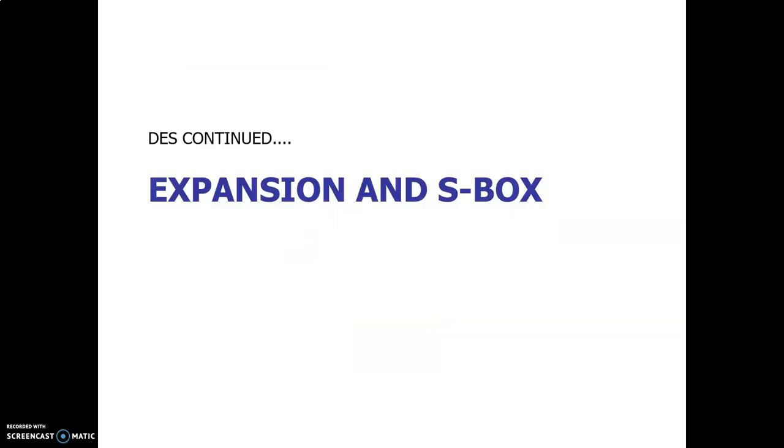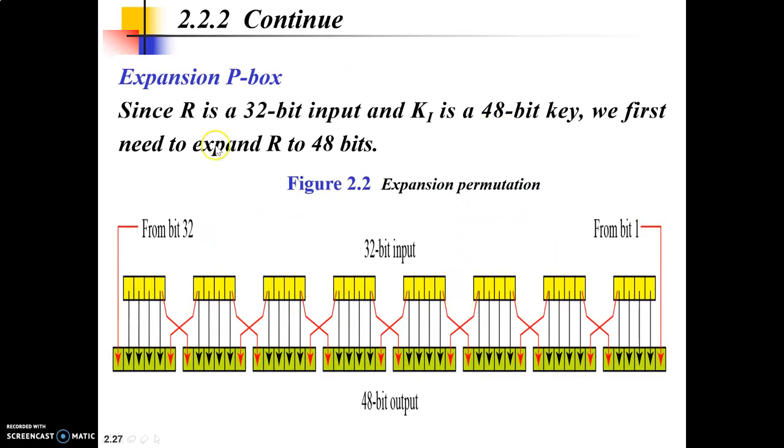Let's talk a little more about expansion and S-boxes. We have R, which is our right hand side, and we have a key which is 48-bits. The problem is that for XOR operation, both values should be the same. You cannot change your key because it is a fixed value of 48-bit, but you can change R. This is why you will expand R from 32-bits into 48-bits, so that it can easily be XORed with your 48-bit key.